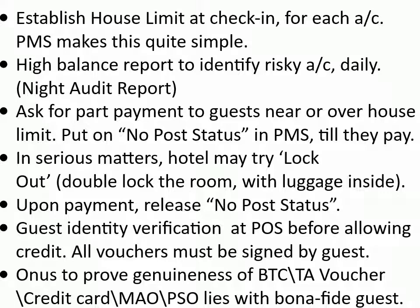Methods of credit control: Establish a house limit at check-in for each account — PMS makes this quite simple. Use a high balance report to identify risky accounts daily. The night audit report may ask for part payment from guests near or over the house limit. Put accounts on no-post status in PMS until they pay. In serious matters, the hotel may try lockout — double-locking the room with luggage inside. Upon payment, release the no-post status. Guest identity verification at POS before allowing credit; all vouchers must be signed by the guest. The onus to prove genuineness of bill-to-company, travel agent voucher, credit card, meals and accommodation order, and passenger service order lies with the bona fide guest.